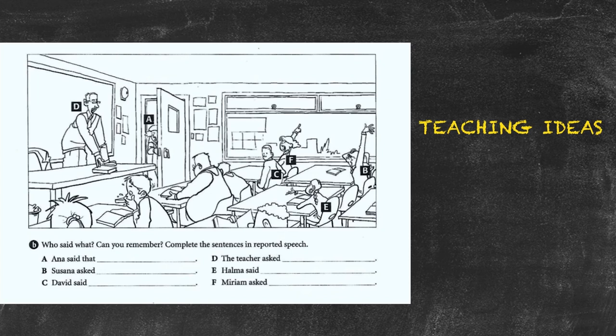So using the same example of the girl before pictured here as E the students will be challenged to report her speech hopefully coming up with she said that she couldn't see the board. This will continue so on and so forth for each person in the picture.